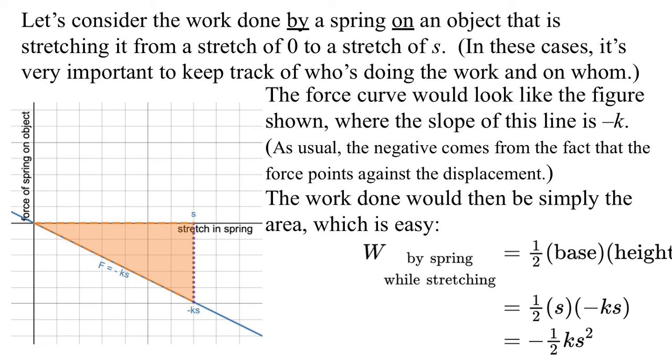The force curve would look something like the figure shown. We would plot the force, and it would be minus ks in this case because as we stretch the object, the force pulls back towards the origin. Because it's below the axis, of course, it's negative, which is not surprising. And then the work is simply the area. This is the stuff from the section on varying forces. So the work done by the spring while stretching is 1 half base times height.